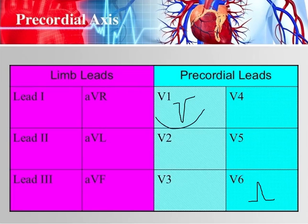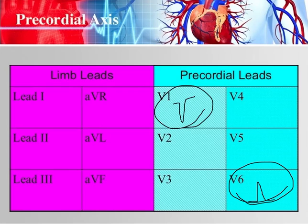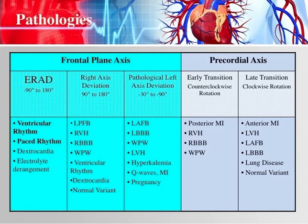You should have almost no R wave in V1 — maybe one or two millimeters. In V6 you should have almost no S wave, no negative deflection. That would be normal. The transition normally occurs between V2 and V4: V2 should be mostly negative, V4 should be just a little bit more positive than negative, maybe biphasic. There are things that can cause deviation of this precordial axis.